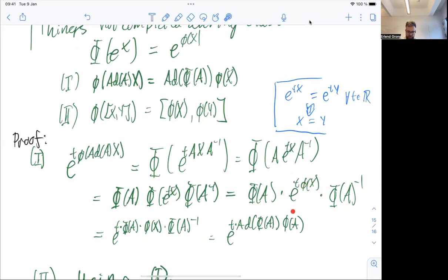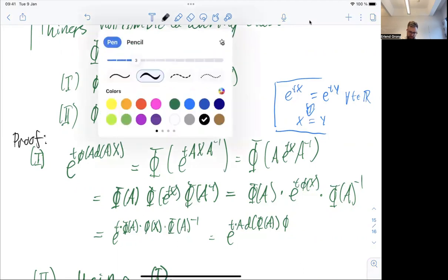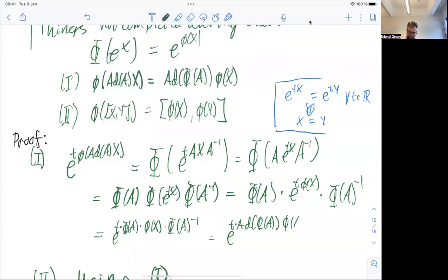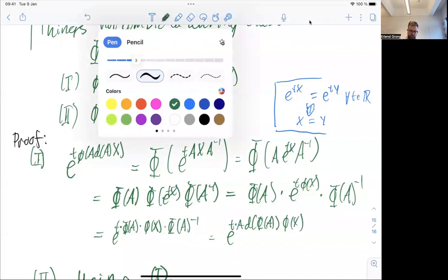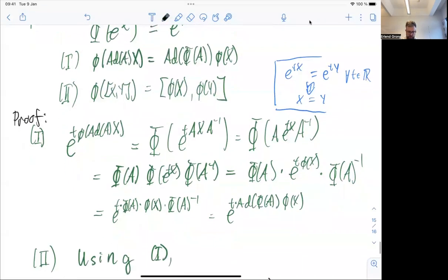Now, this here's an exponential, here's a conjugation, I can put that conjugation on top. And this is exactly the desired result, the adjoint map of large phi of A, apply to phi of here, this should be x. Right, so here this completes the first part of the proof.